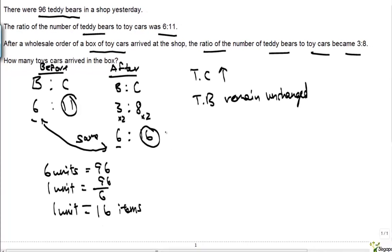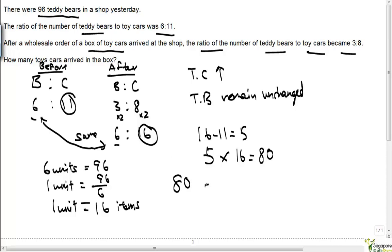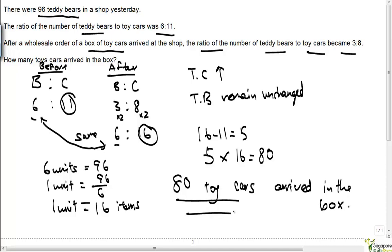One unit is equal to 16 items. The number of toy cars increased from 11 to 16 units, so 16 minus 11 equals 5 units. Five times 16 equals 80. Since one unit equals 16 items and there was an increase of 5 units, 80 toy cars arrived in the box. That is our answer.